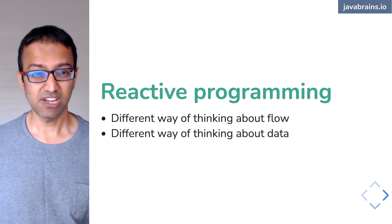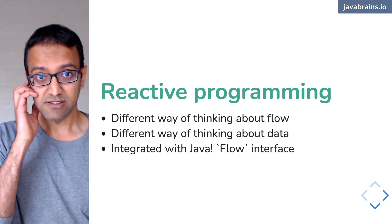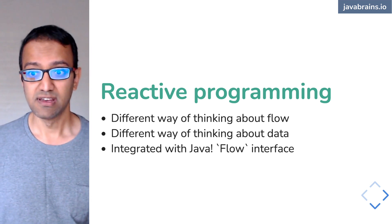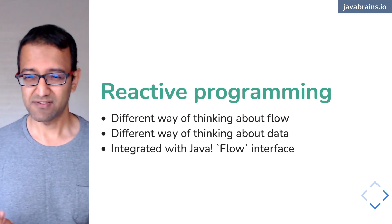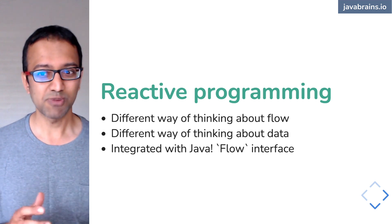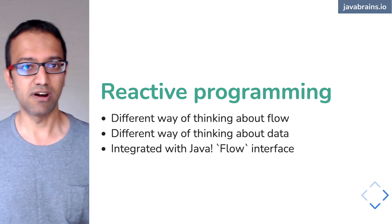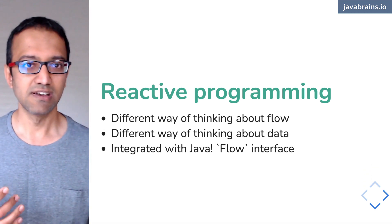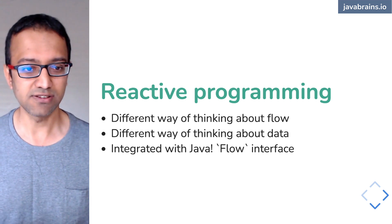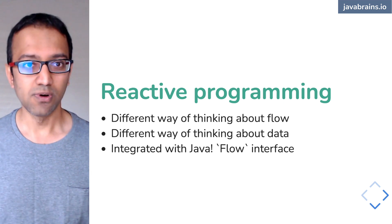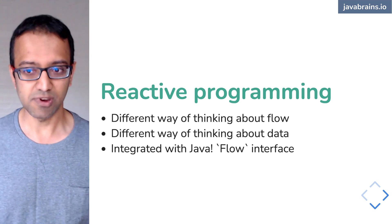A lot of people don't know this, but it's actually integrated into Java. There is a Flow interface in Java — an interface called Flow, built into Java 9, so it's been around for a while. Java doesn't provide the implementation; it provides just the interface. The reason for providing the interface is they noticed there were a lot of libraries using reactive programming paradigms and they wanted to standardize it. So Java tells you how to do reactive, but doesn't give you the implementation — you have to go to one of those libraries.